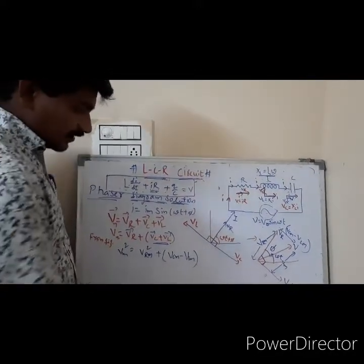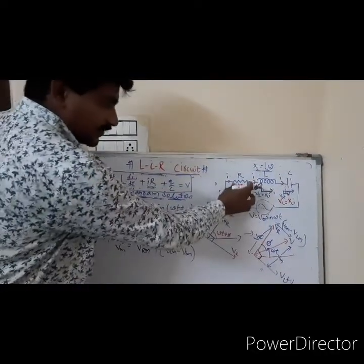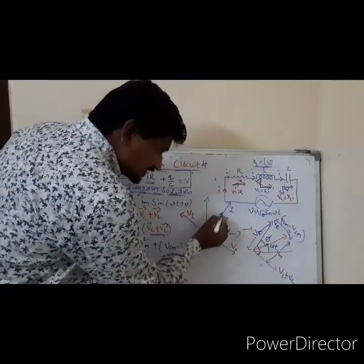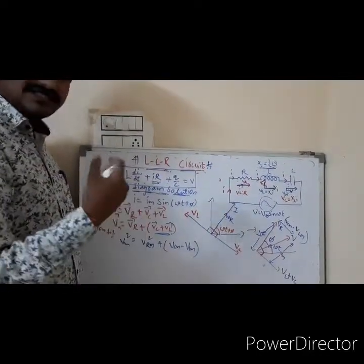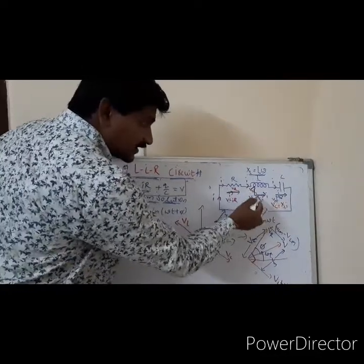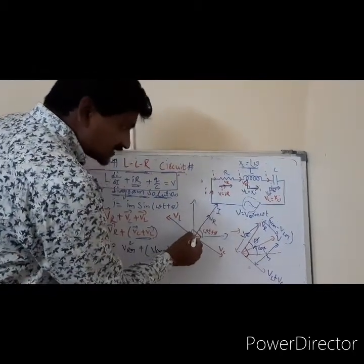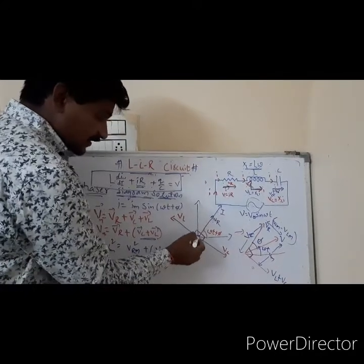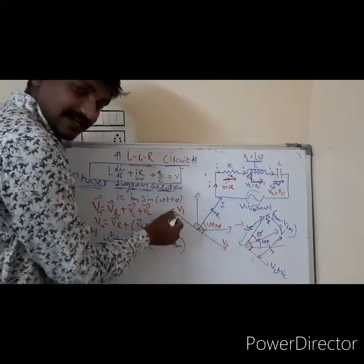Here I have drawn the phases of current and voltage. Voltage across the resistance and the current flowing through the resistance are in the same direction — zero phase difference between the voltage and current in the case of a resistor circuit. That we have discussed also in a pure resistive circuit. Coming to the inductor, the inductor voltage is leading with 90 degrees with respect to the current, meaning the source is leading in the case of the inductor.